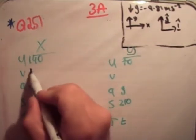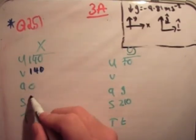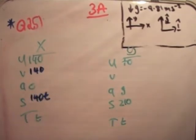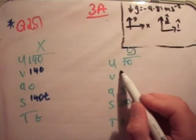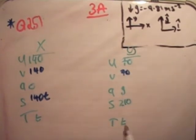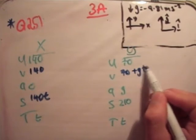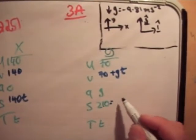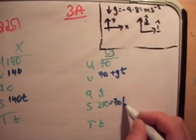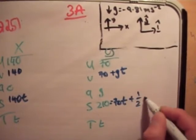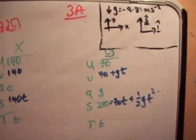So what can we do here? V is equal to u plus at. So this is 140 and this is 140t. This is 75... ut, which is... V is equal to u plus at. And this is equal to ut, which is 75t plus 1 half gt squared.